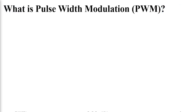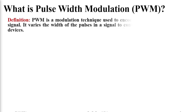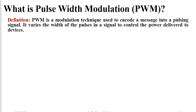First of all, let us discuss what is pulse width modulation, or in short, PWM signals. By definition, pulse width modulation is a modulation technique used to encode a message into pulsing signals. In this technique, we change the width of the pulses to control the power delivered to any particular load. We are using only the width of the pulse to deliver different power to different loads.